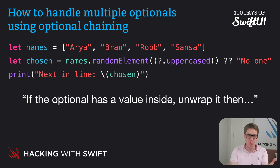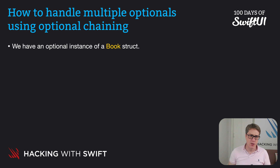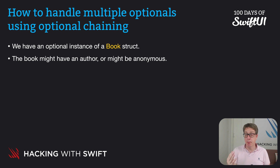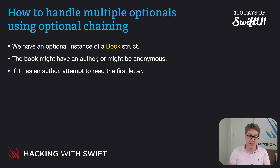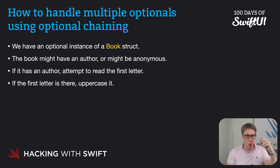We want to place books in alphabetical order based on their author names. If we break it right down, we find the following: First, we have an optional instance of a book struct — we might have been given a book to sort, we might not. Second, the book might have an author or could be anonymous. Third, if it has an author, we want to try and read the first letter — just because the string is there doesn't mean it has actual letters inside; it could be an empty string. So try to read the first letter, and if the first letter is there, make sure it's uppercase — so authors with lowercase names, for example bell hooks, are sorted successfully.